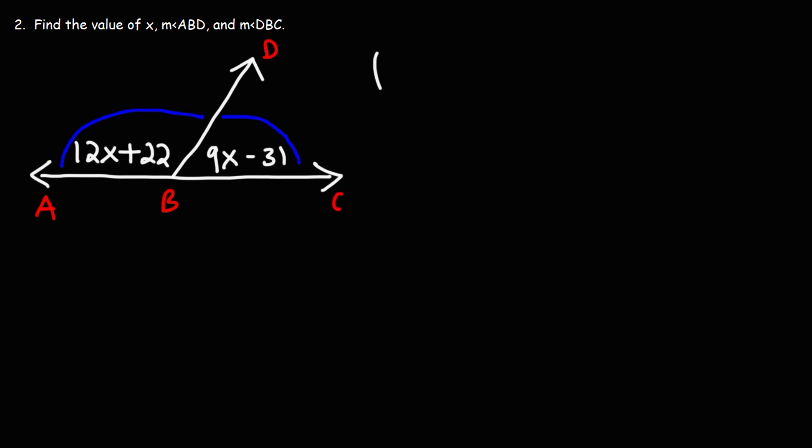So we can write this equation: 12X plus 22 plus 9X minus 31. That's going to equal 180. So let's combine like terms. 12X plus 9X, that's going to be 21X. And then 22 minus 31, that is negative 9.